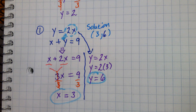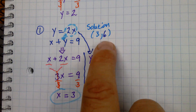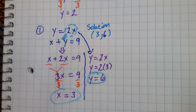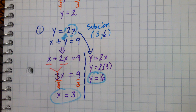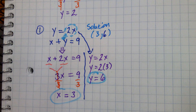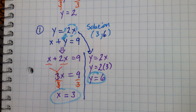Besides two lines intersecting, what else can two lines do? They can be parallel — that would be no solution. Or they can overlap — one line on top of the other — giving infinitely many solutions. We're going to see how those cases appear in substitution.